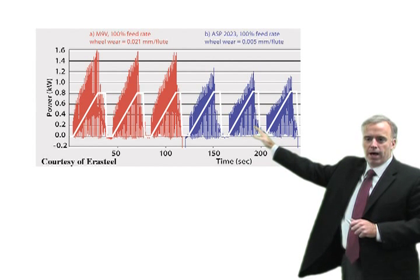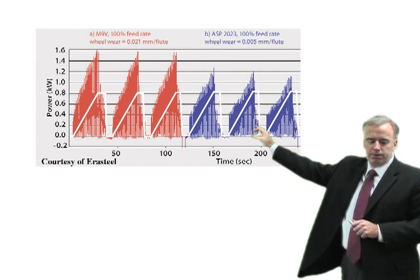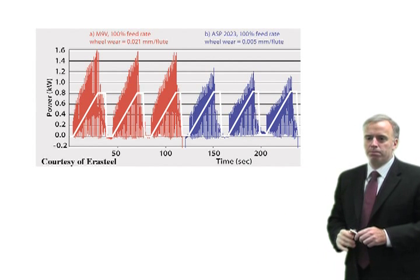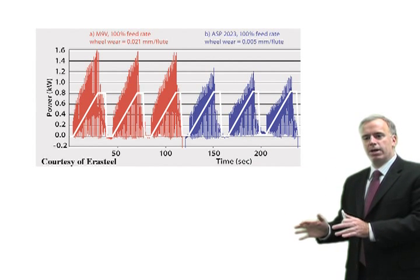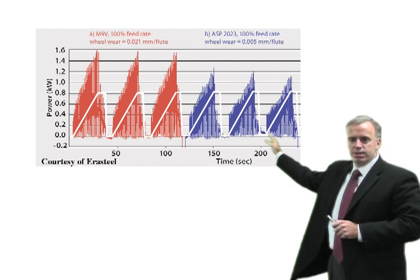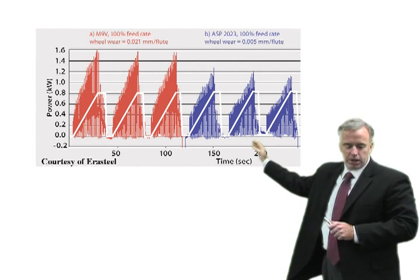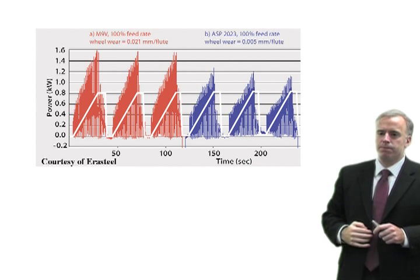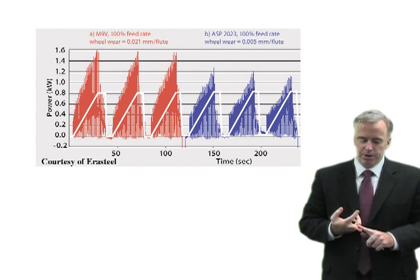So in red, we had the difficult to grind material, and it generated about 1.6 kilowatts of power. We put in the easier to grind material, and we see that the power now dropped to about 1.2 kilowatts. Less power means less heat, and less risk of burn.